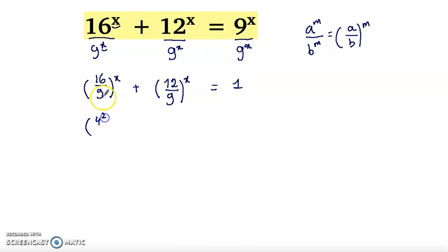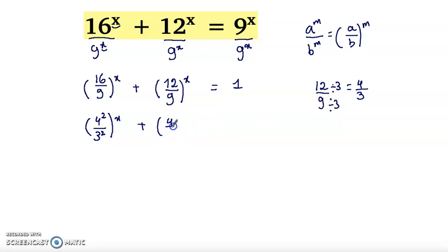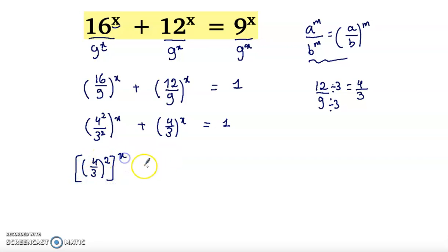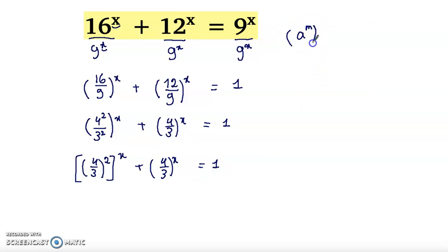Now, 16 is 4 squared and 9 is 3 squared. For the second term, 12 over 9 simplifies — dividing by 3 gives 4 over 3. So we have (4 squared over 3 squared) to the power x plus (4 over 3) to the power x equals 1. Using the rule again, (4 over 3) squared to the power x equals (4 over 3) to the power x all squared.